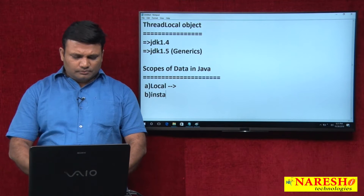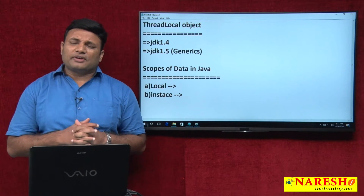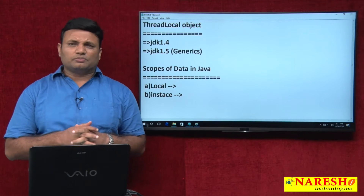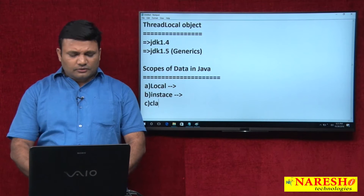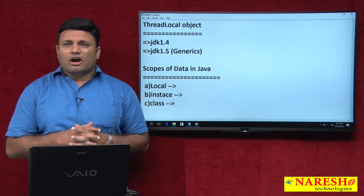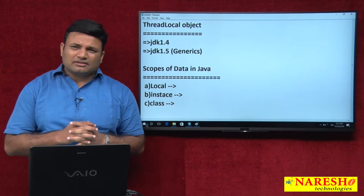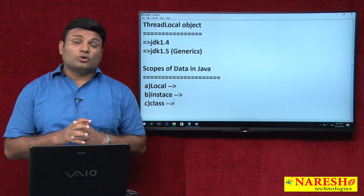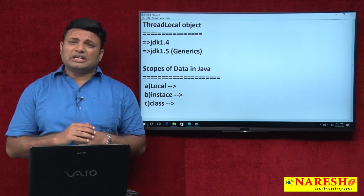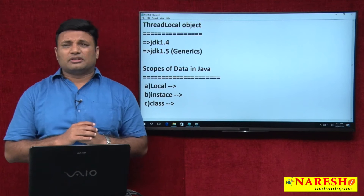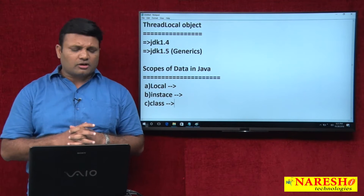Next is instance scope — when you declare an object as the instance variable of a class, it becomes instance scope. Next is class scope — when you declare a variable or object as a static member variable of a class, it becomes class scope, because by using the class name or by using various objects created for that class, we can access that member variable or object.